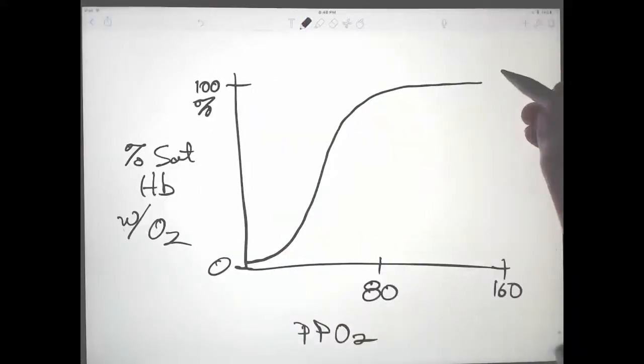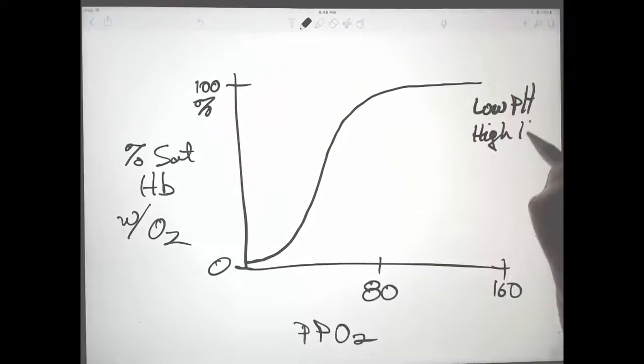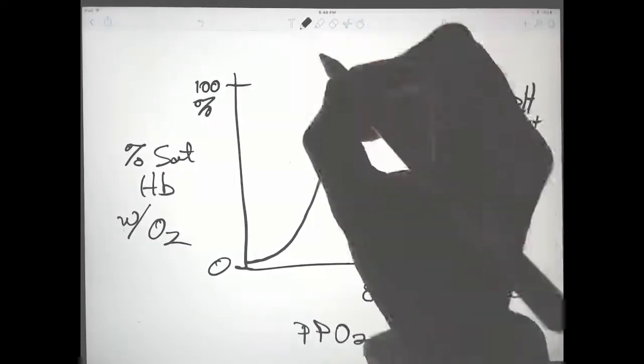Another condition in which more oxygen may be needed is when there's high acidity, so low pH or high H+. That happens when there's high carbon dioxide or high lactic acid, both of which are produced when tissues are working very hard and they're a reliable indicator of low oxygen. That's called a Bohr shift.